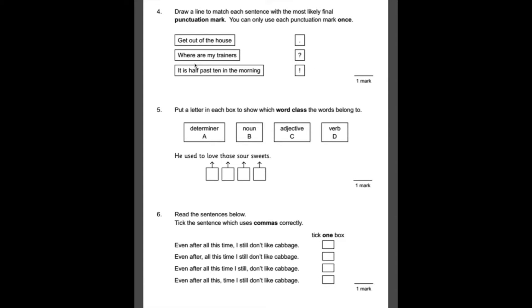Number four, draw a line to match each sentence with the most likely final punctuation mark. You can only use each punctuation mark once. Okay, so we have a full stop, a question mark and an exclamation mark. So we should be able to match these up quite easily. The first one that springs to mind is where are my trainers? That is obviously a question. So we can rule the question mark out. The first one, get out of the house, sounds like somebody is exclaiming or potentially shouting in this case. So we would definitely have an exclamation mark for that one. And the third one, it is half past ten in the morning. That's just a statement. We don't need any fancy punctuation at the end other than a full stop.